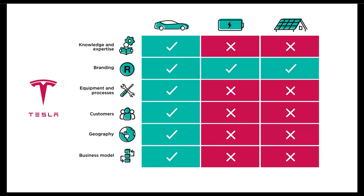The Model S, Model X, Model 3 and Model Y share a distribution model. The Model X and Model S share a luxury positioning strategy, as do the Model Y and Model 3 which have a near luxury positioning strategy. It's easy to see the vertical relationships between solar roofing panels to make electricity, batteries to store electricity, and electric cars which use electricity — but these businesses require fundamentally different expertise, equipment, processes, and distribution channels.